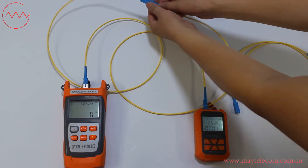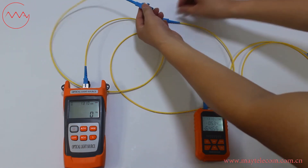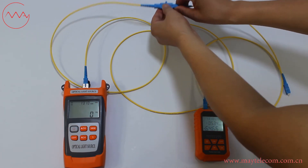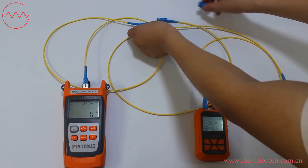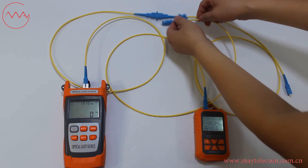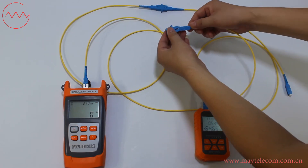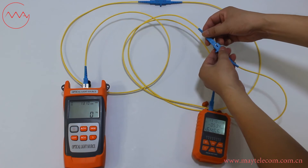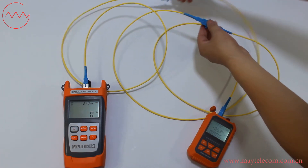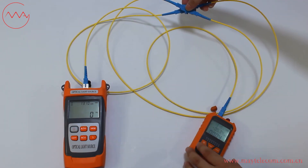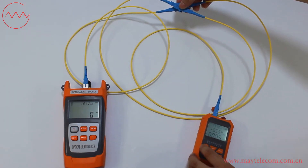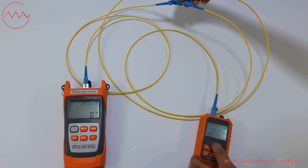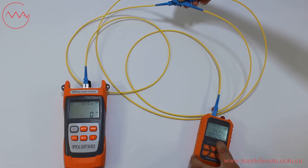Disconnect this connector and connect with the patch code under test. The total loss of the patch code under test is 0.05 dB.